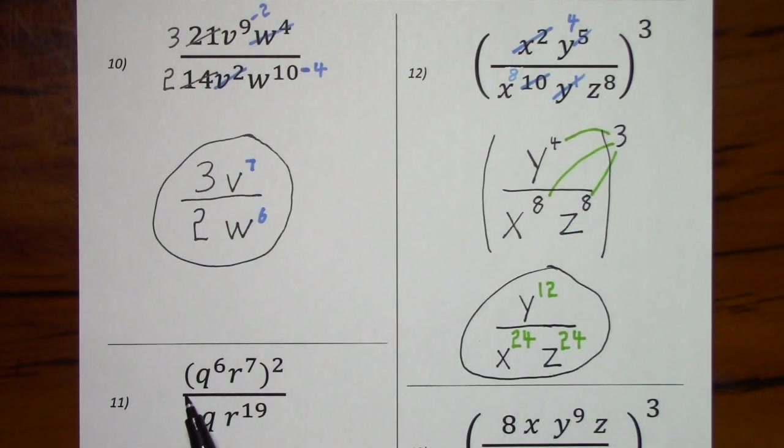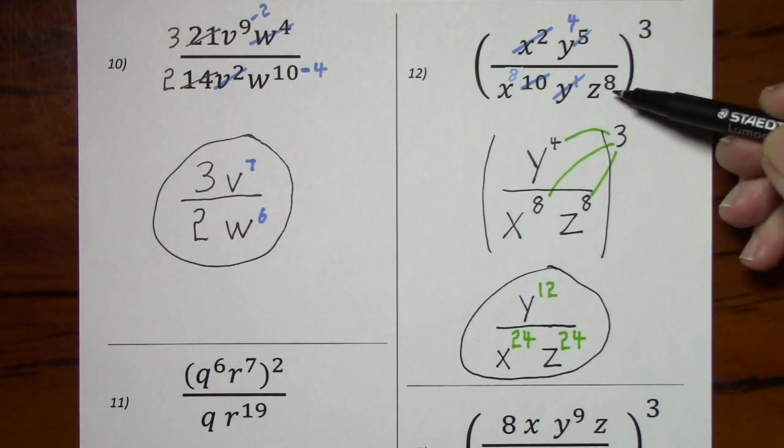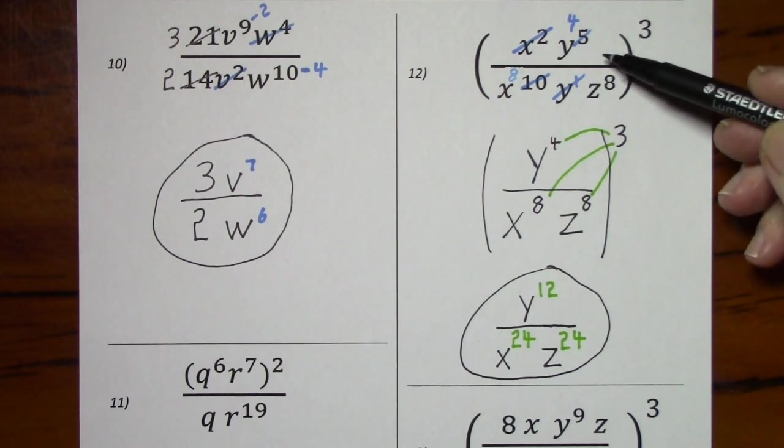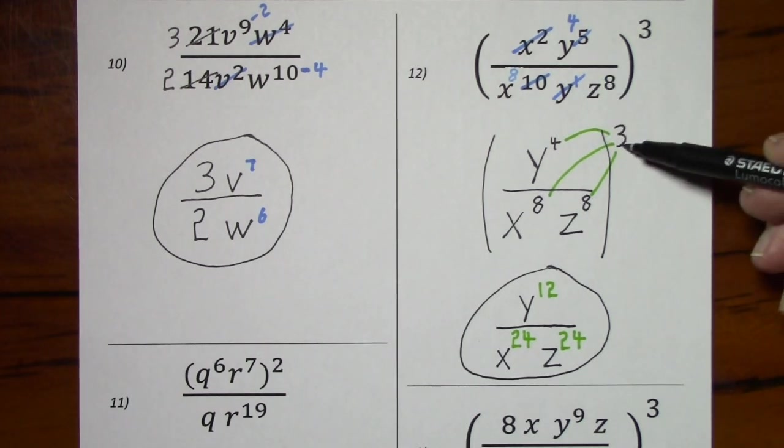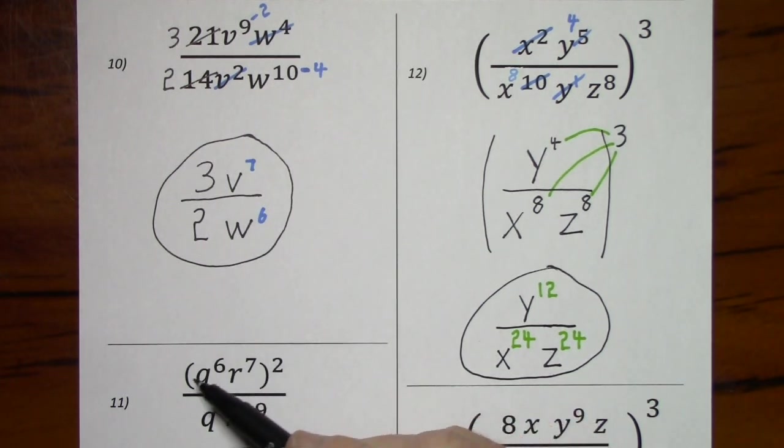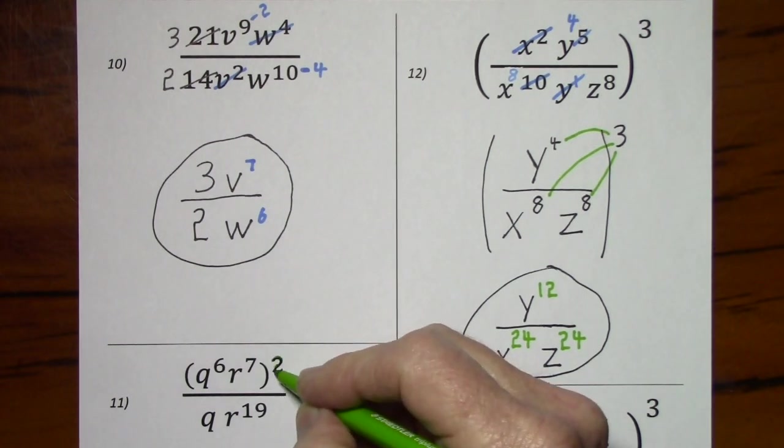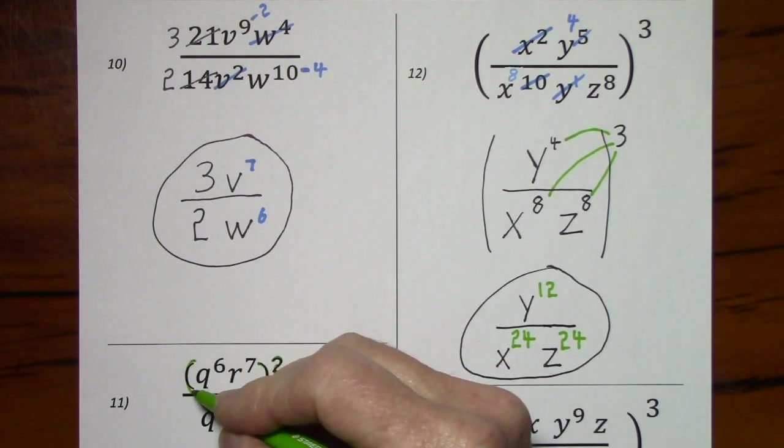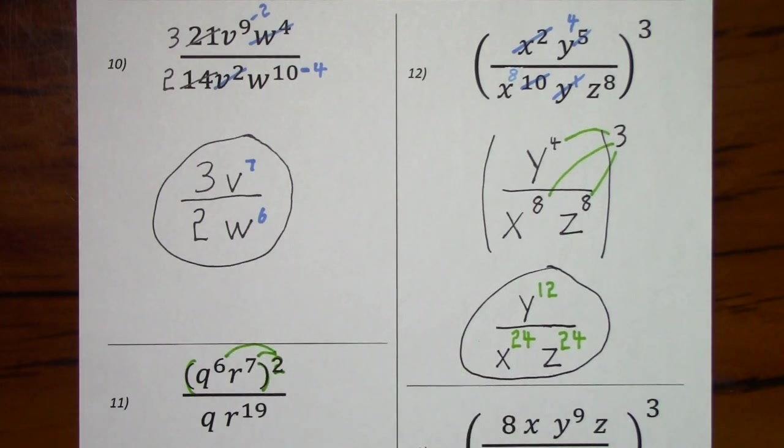Looking at 11, the parentheses only apply to the numerator. So unlike 12, where parentheses apply to the numerator and denominator, that is the entire fraction, we had the option of cleaning things up inside first, then raising everything to the 3rd power as we did down here. With this one, the q's and the r's cannot interact. We have to take care of the parentheses, everything raised to the 2nd power first.